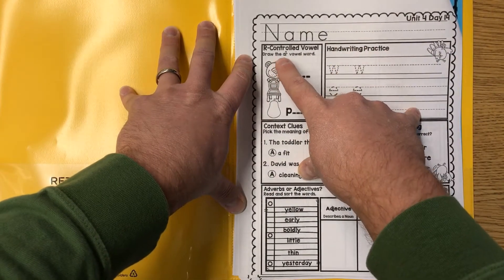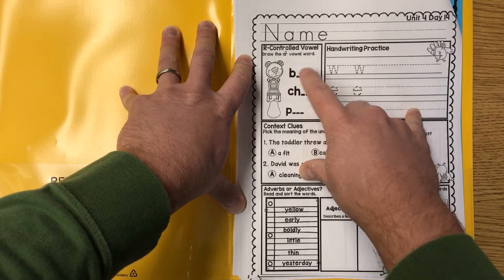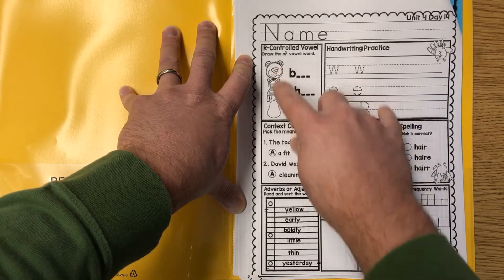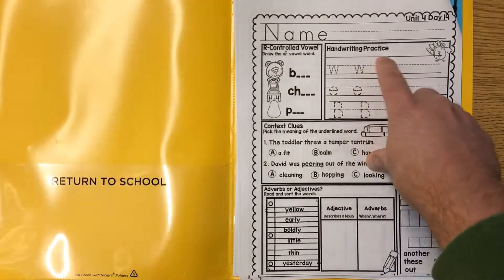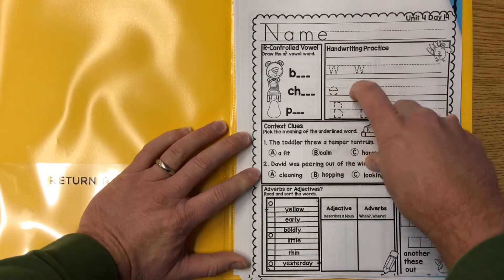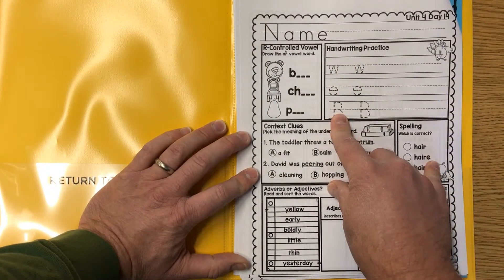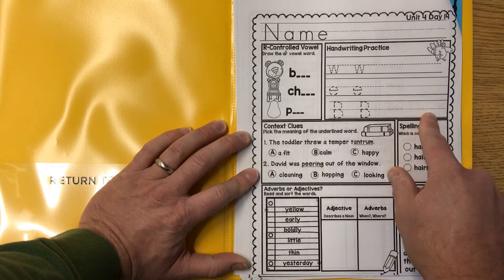R controlled vowel. Draw the R vowel word for B, Ch, and B, whatever those are. Handwriting practice, we got lowercase w and e and a capital B. Write the capital B three more times.